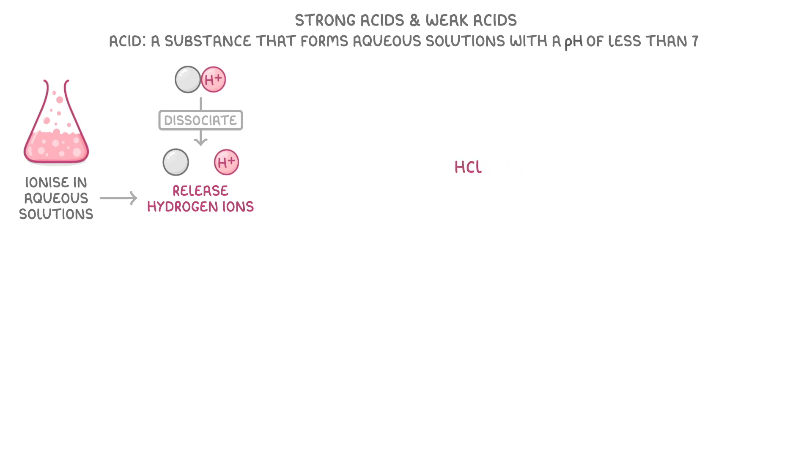For example, hydrochloric acid actually exists as H plus and Cl minus ions, while nitric acid ionises into a hydrogen ion and a nitrate ion. And remember a hydrogen ion is just a hydrogen atom that's lost one electron, so it's actually just a proton.